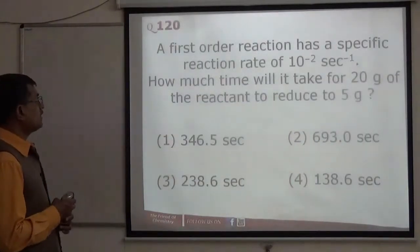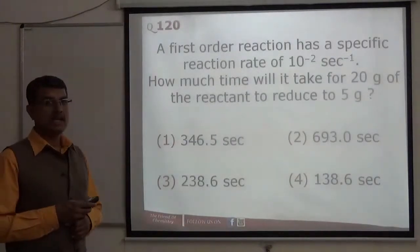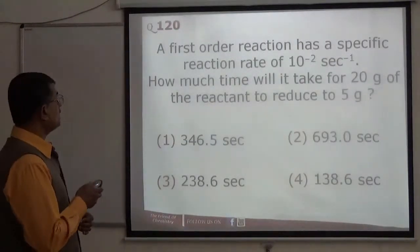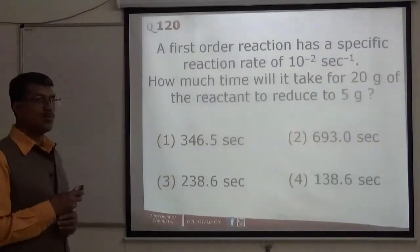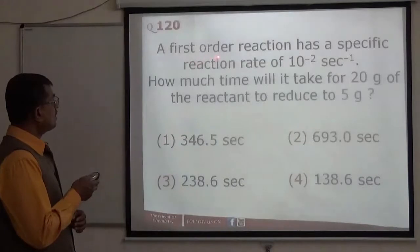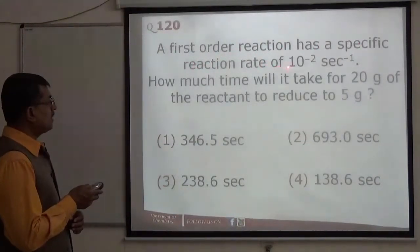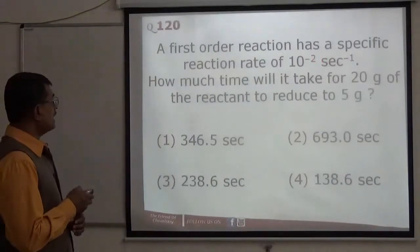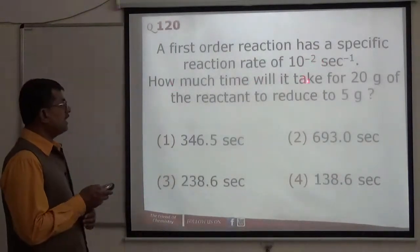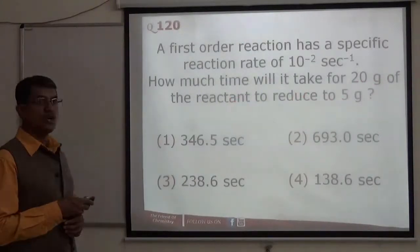Question number 120. This is a chemical kinetics related numerical. Easy numerical. If you know just this formula you can do it. A first order reaction has a specific reaction rate of 10 to the power minus 2 per second. How much time will it take for 20 gram of reactant to reduce to 5 gram?